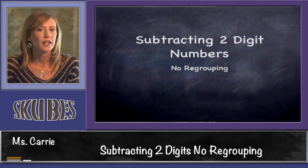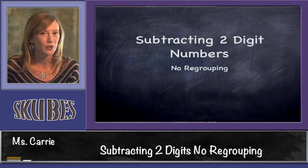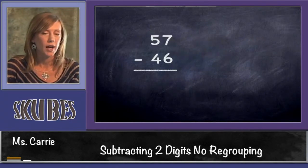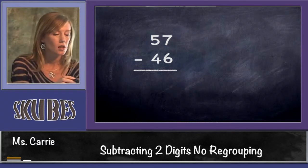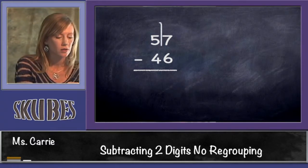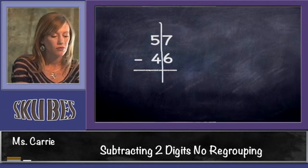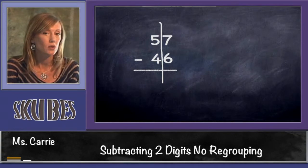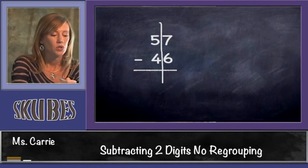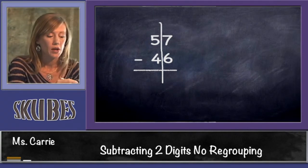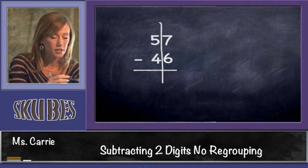This lesson is on subtracting two-digit numbers without regrouping. When we subtract two-digit numbers, we always want to start in the ones place. To help us remember that, I'm going to draw a line down the middle to differentiate between the ones place and the tens place. We know that the ones place is on the right side, so we'll start with our bigger number at the top and subtract our smaller number. We know that 7 minus 6 is 1, and 5 minus 4 is 1, so our answer is 11.